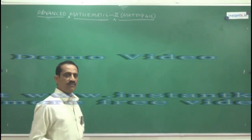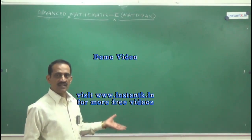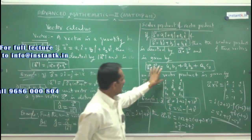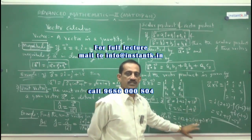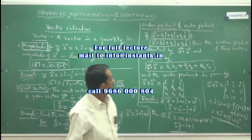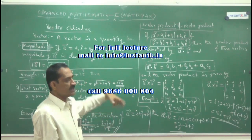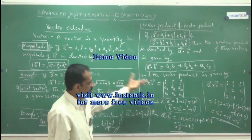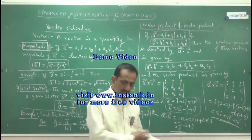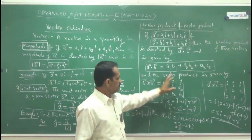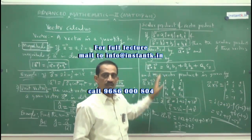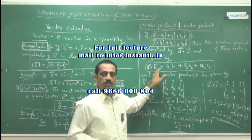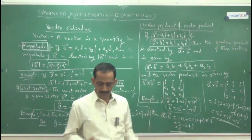Starting with vectors and vector calculus, when two vectors are given we can find the scalar product as well as the vector product. You should know what the applications of these are, because questions need not just ask you to find the scalar product or vector product directly — they may ask something else. One application of the scalar product is finding the angle between two vectors.